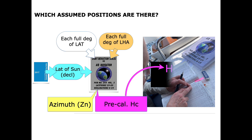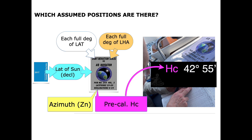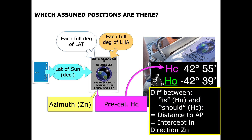Once you have that, it's easy. You get the pre-calculated HC. You can compare the two, and any difference between what you should have measured (HC) and what you did measure (HO) is the distance to the assumed position — that's the intercept, either away or closer. That is not so difficult. But how about the full degree of local hour angle? And now comes the smart thing with this book.